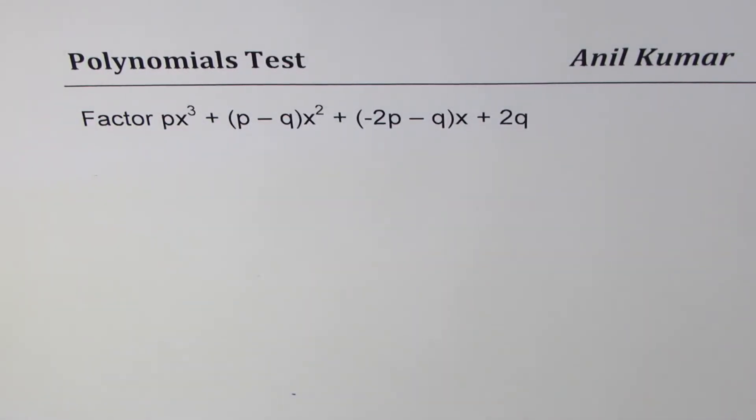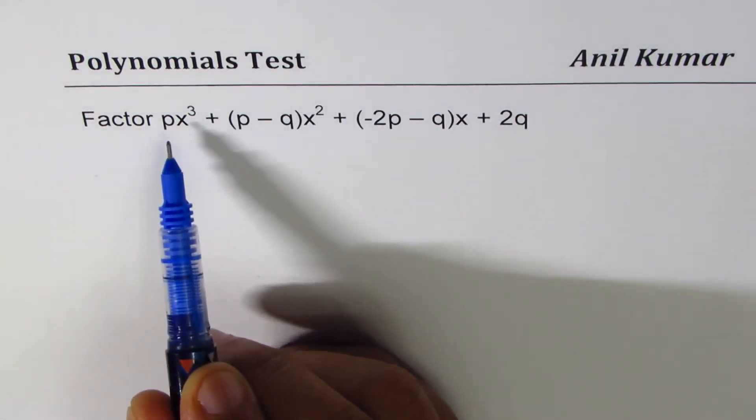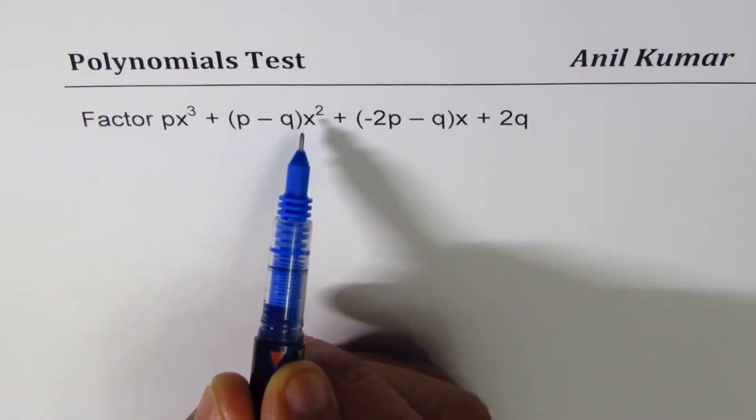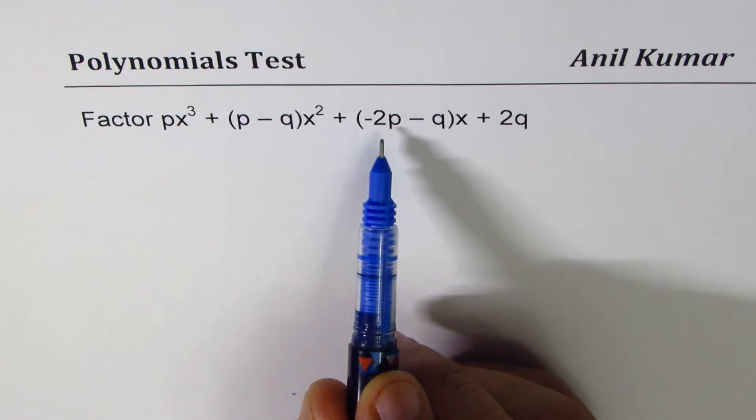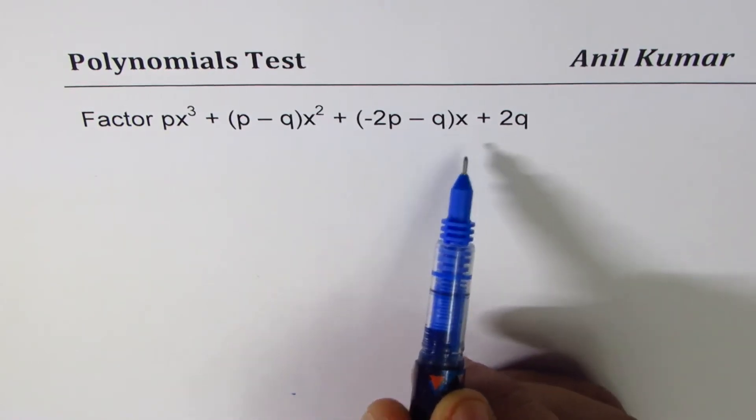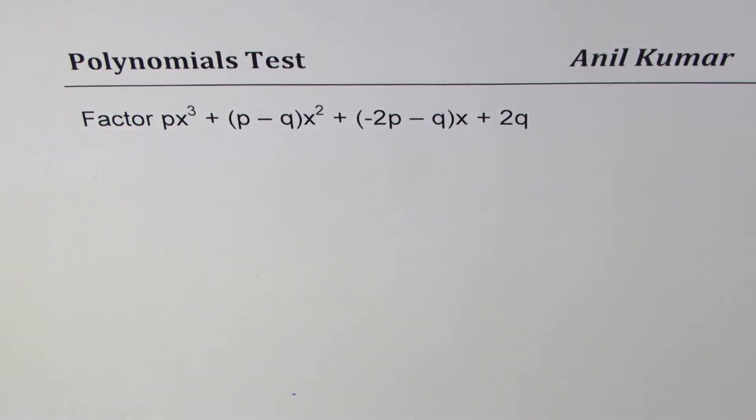I'm Anil Kumar sharing with you a thinking test question on factoring polynomials. The question here is factor px³ + (p - q)x² + (-2p - q)x + 2q. You can pause the video, answer the question, and then look into my suggestions.